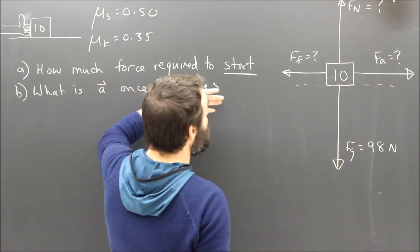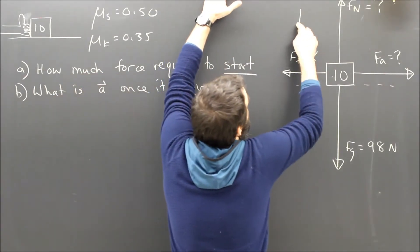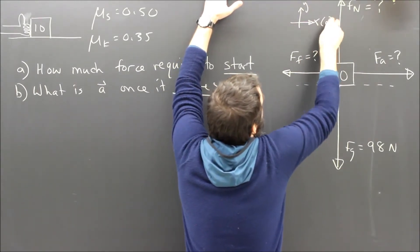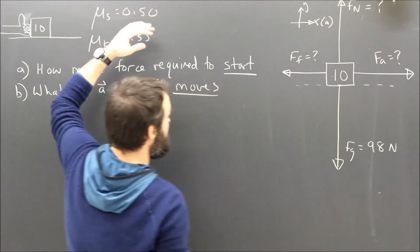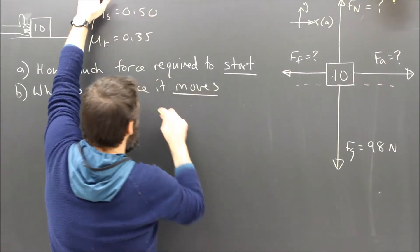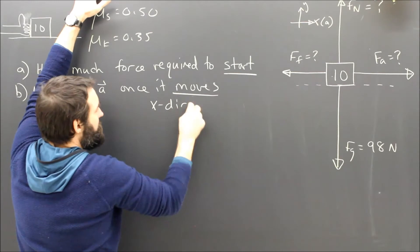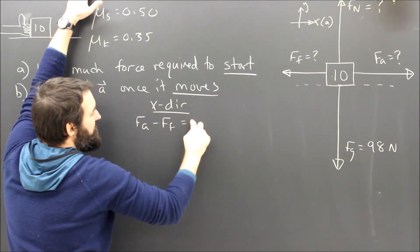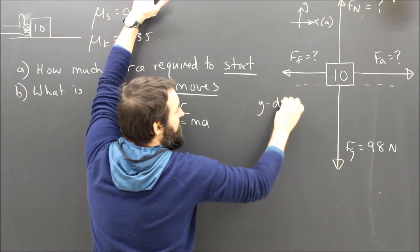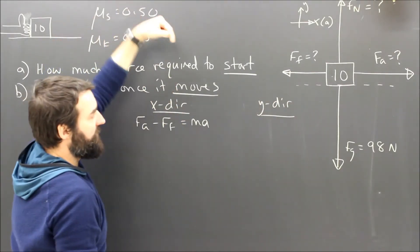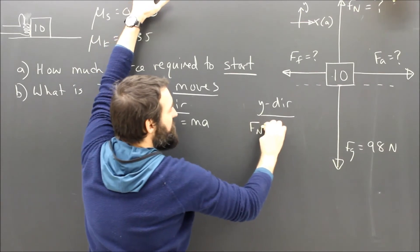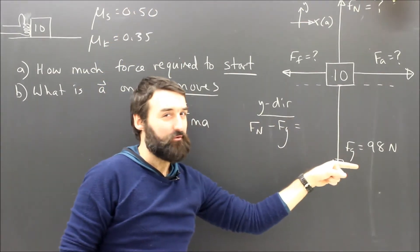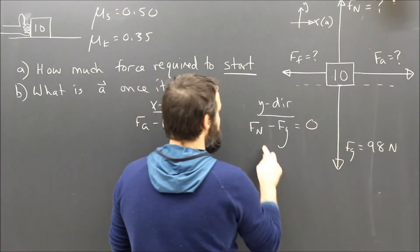Which way is this thing going or accelerating? To the right. So I'm going to call to the right x because that is the direction of acceleration. And now I'm going to write down my x and y equations. My x direction equation is Fa minus Ff equals Ma. And my y direction equation, the normal force minus gravity. Those are the only two forces. This thing is accelerating to the right, so it's not accelerating up or down. So it's going to be equal to zero.